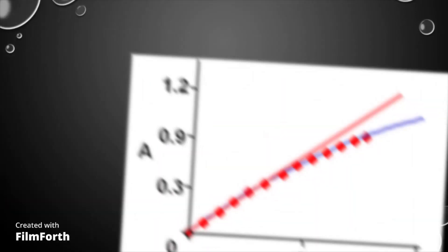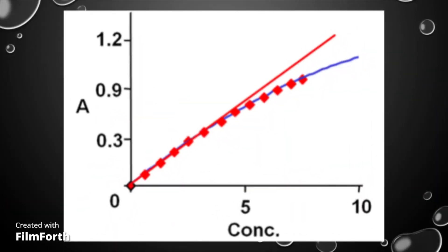Therefore, using AAS, you can measure a specific element in a material based on the amount of light absorbed at a defined wavelength, which corresponds to the known characteristic of an element you are testing for.